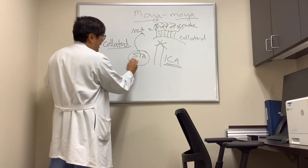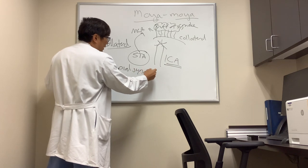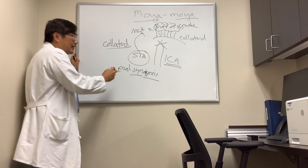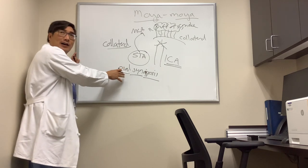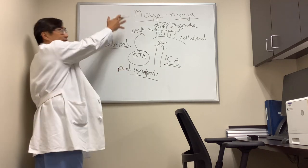The other way to form a more robust collateral is with a PIL synangiosis. Angiosis means blood vessel and syn means together. And so you just lay the superficial temporal artery down after the craniotomy onto the pia to get another collateral to form.